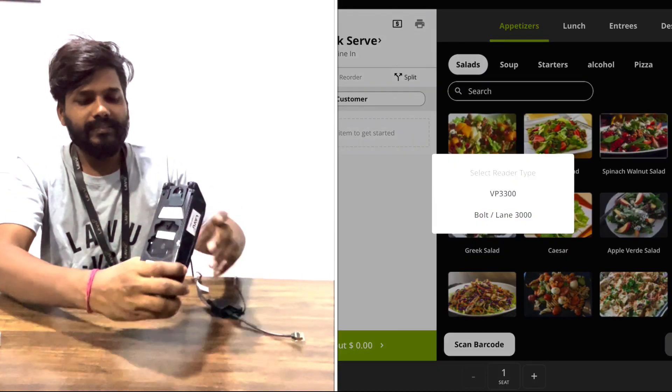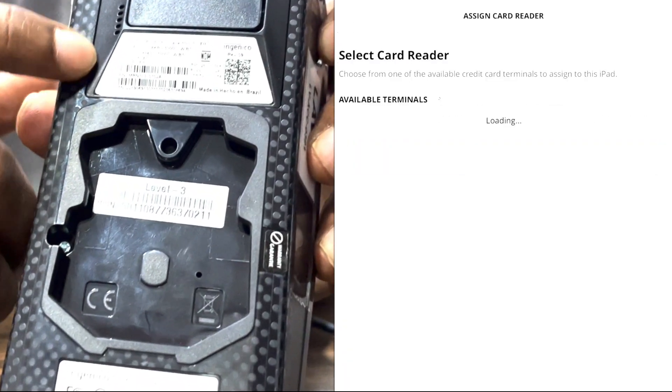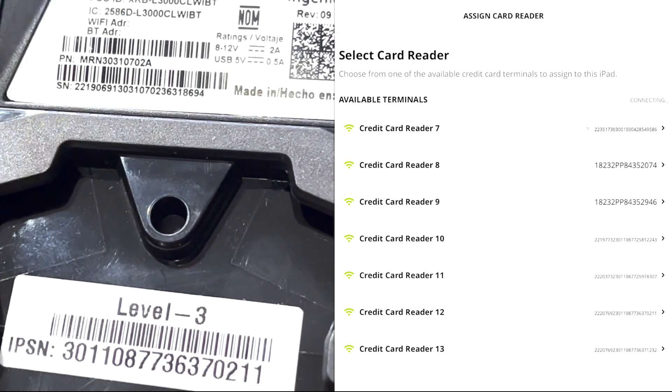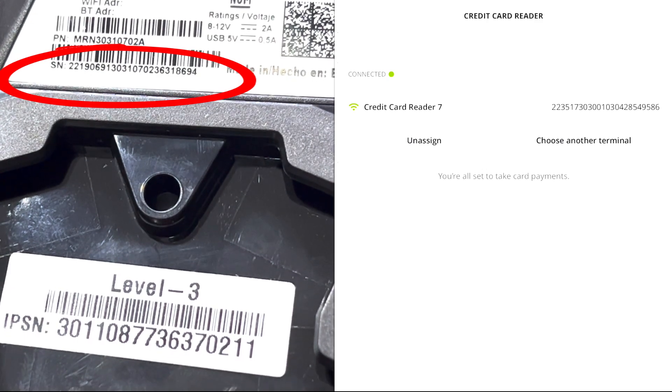Once the reader says connected, navigate to card reader settings in the point of sale, select Lane 3000 and then connect. If you have multiple card readers you can connect to, you should match the serial number on the back of the reader with the serial number you see on the point of sale.